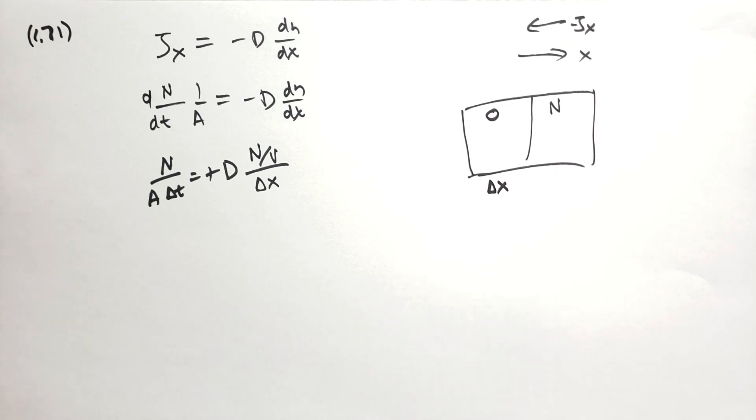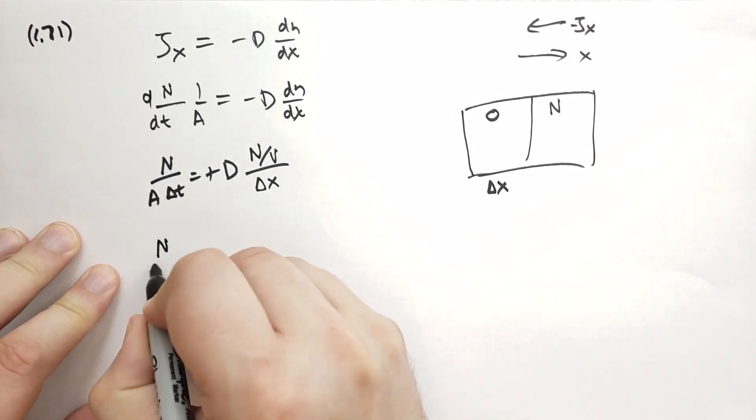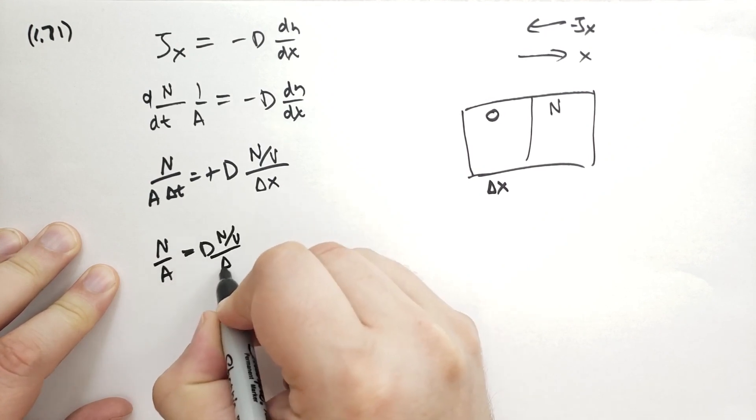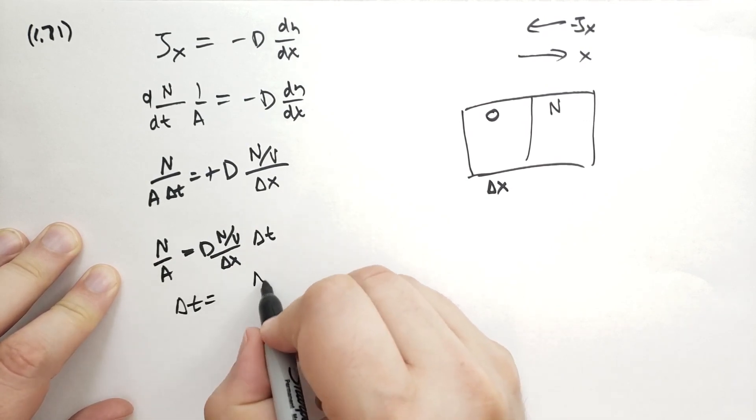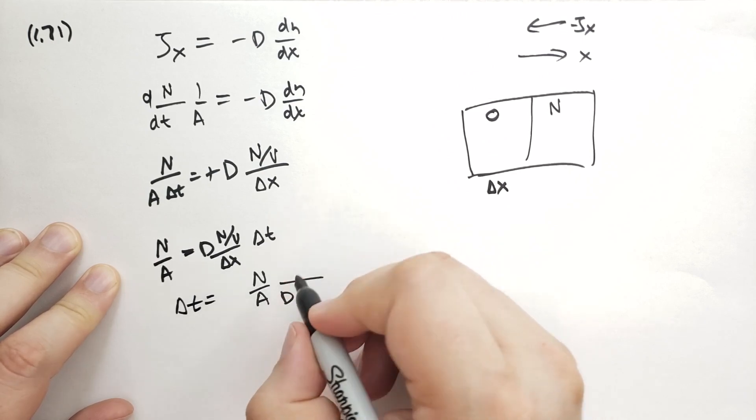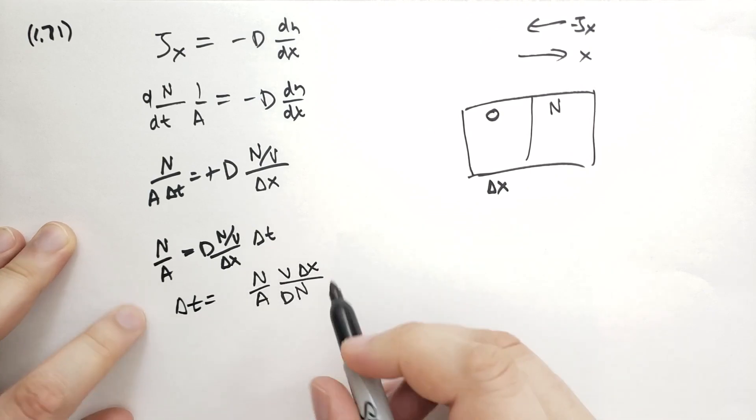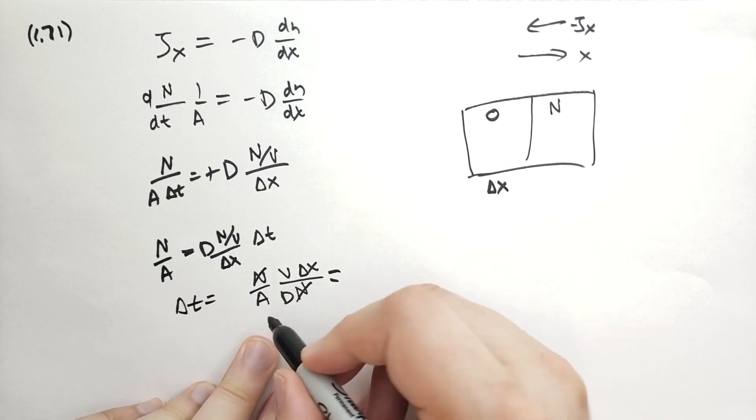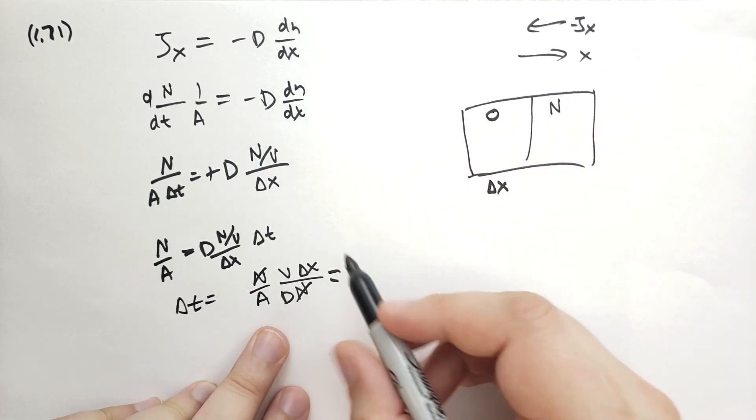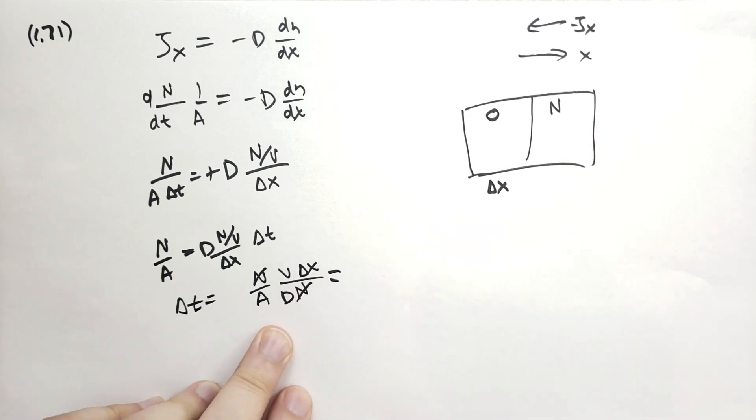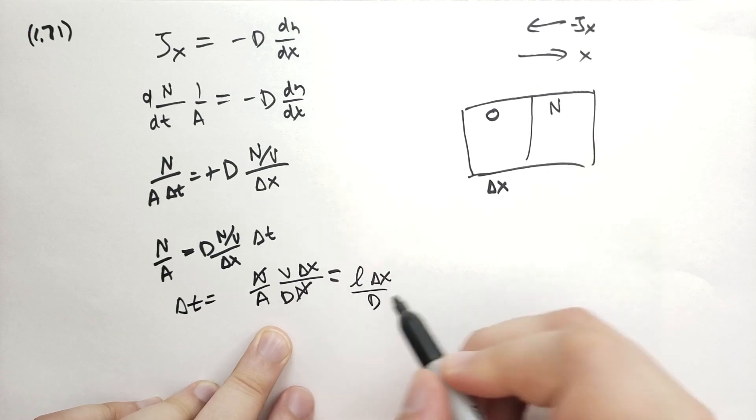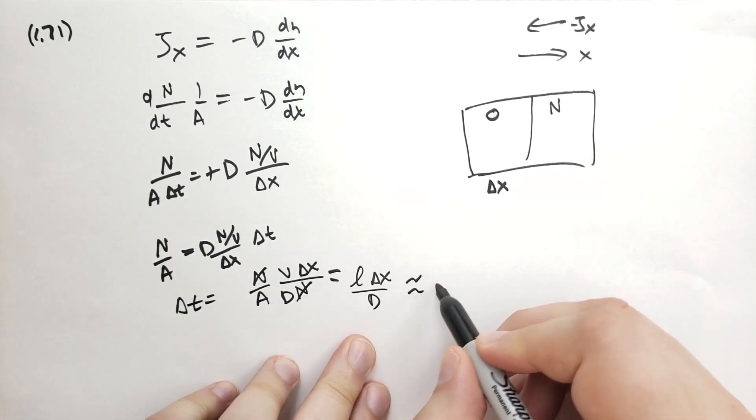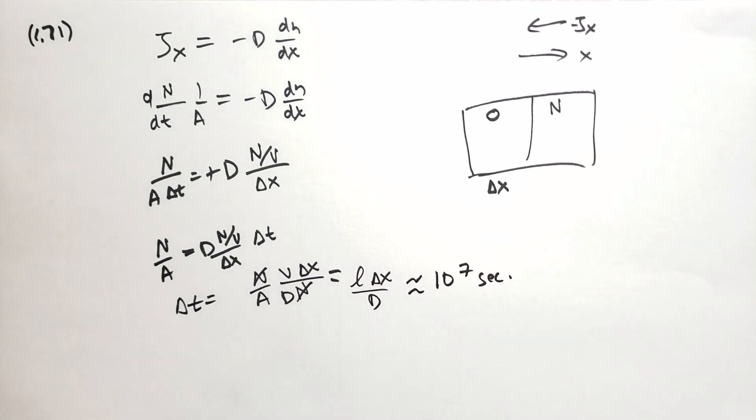So using this formula that he gave us, you can see that it should take order of months to get the particles to move across the side. How do we do that? We have n over A equals dn over v delta x times delta t. So delta t is equal to n over A. And then we have D on the bottom, we have n on the bottom, we have v and delta x on the top. So these n's cancel. And the area is just the cross section of the cup. And then we are able to get the volume of the cup here as well. So just the length of the cup really is all that matters. So we have the length of the cup times the delta x times D, divided by D. In this case, D is so small that we get an answer that's about 10 to the 7 seconds. That's about 4 months.